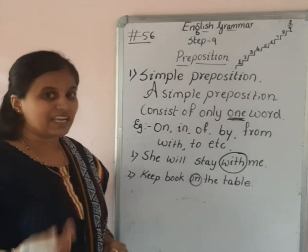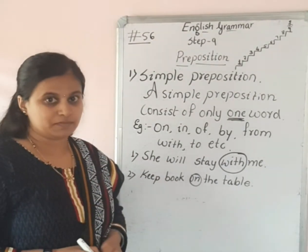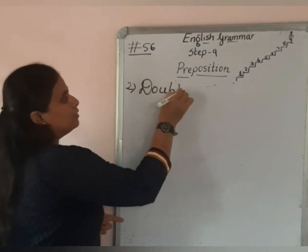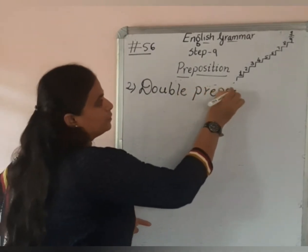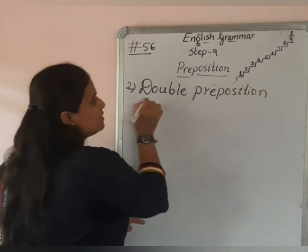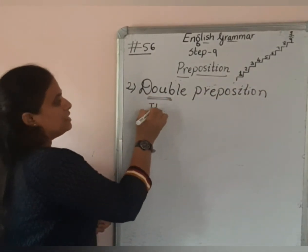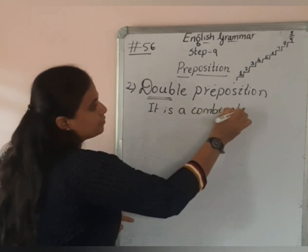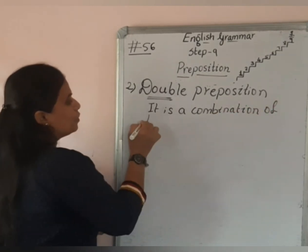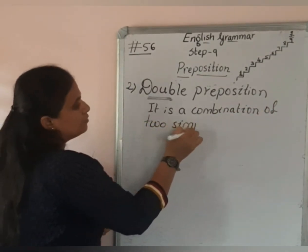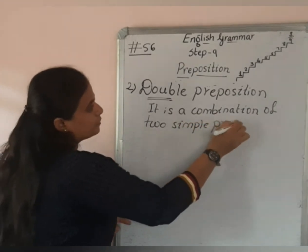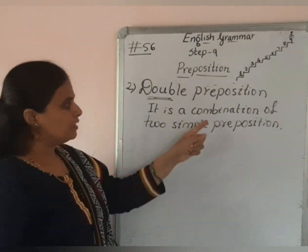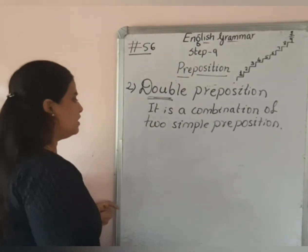Let's have a look at the second type, which is double preposition. A double preposition is a combination of two simple prepositions. Let's have an example.